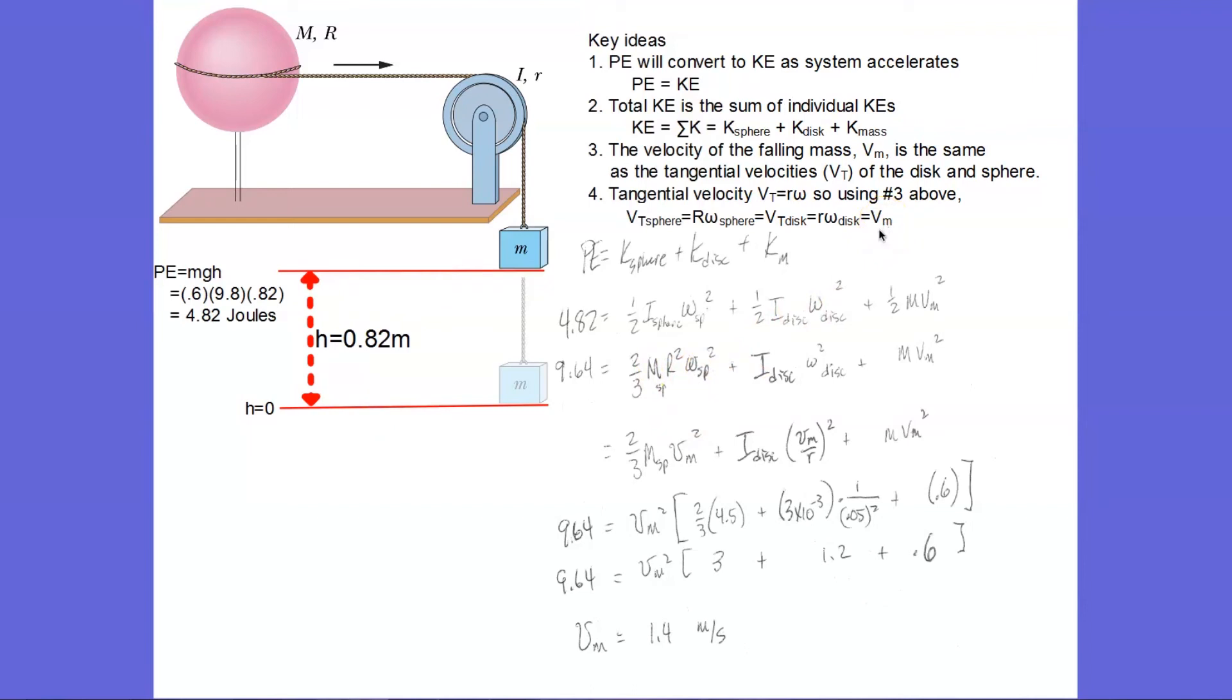How is omega and tangential velocity related? So I notice here r omega, that is the tangential velocity of the sphere. But it's also the velocity of the falling mass. So r squared omega squared is the square of this. So I can replace r squared omega squared with vm squared.